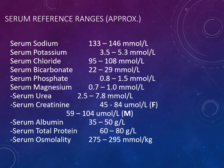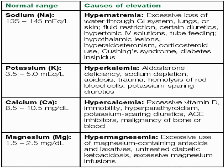I'll be making more videos in future explaining why all these tests are done, what the purpose is, what sort of results can be expected, and what treatment is involved. Briefly, I will talk about salt imbalances regarding sodium, potassium, calcium and magnesium. If sodium levels are increased, that's called hypernatraemia. This is because of excessive loss of water through the gastrointestinal system, lungs or skin; fluid shifts; certain diuretics; hypotonic IV solutions; tube feeding; hypothalamic lesions; hyperaldosteronism; corticosteroid use and Cushing's syndrome; and diabetes insipidus.